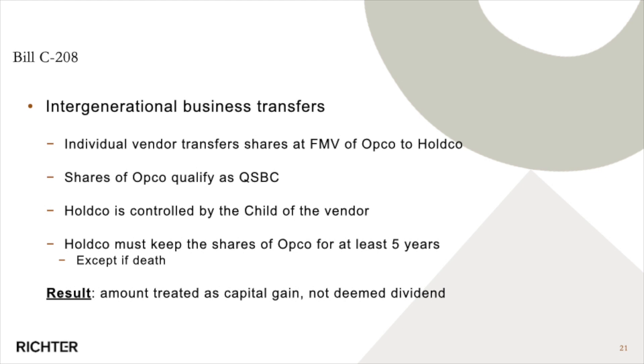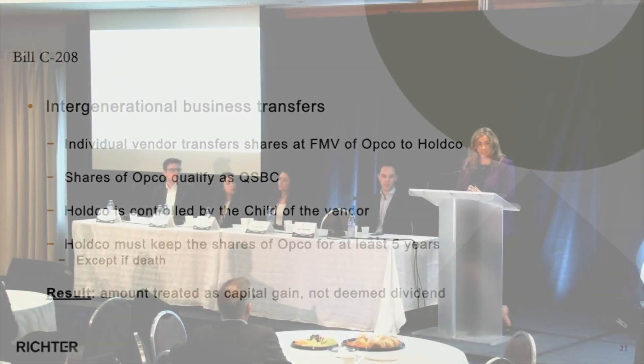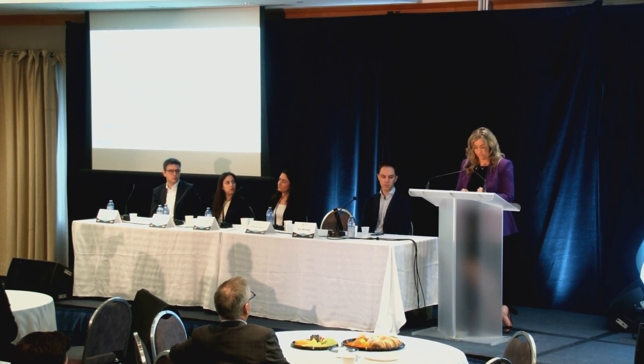Under the 2021 rules, conditions had to be met for the vendor to benefit from capital gains treatment: an individual vendor with QSBC-type shares transferring to a company controlled by their child, but only to the extent the entity purchasing the shares held them for 60 months — five years. The government's concern was that transfers were being made to family members while the owner-manager remained heavily involved, making it not a genuine intergenerational transfer but rather tax planning to crystallize the capital gains exemption.